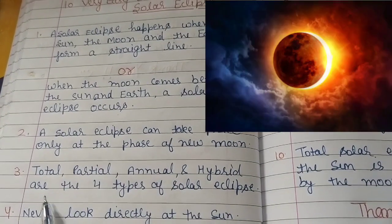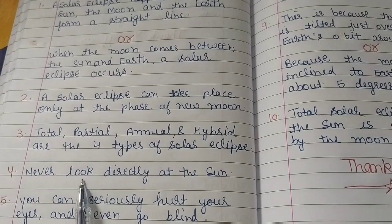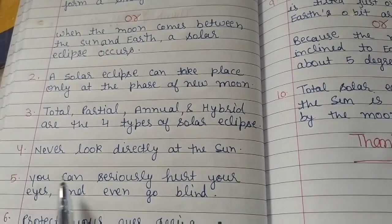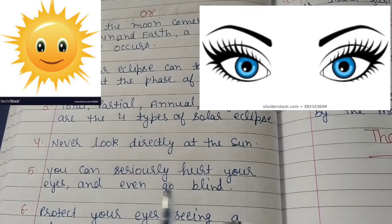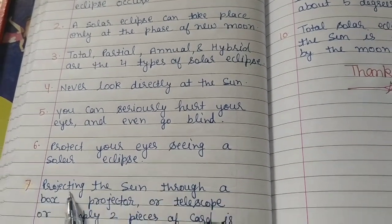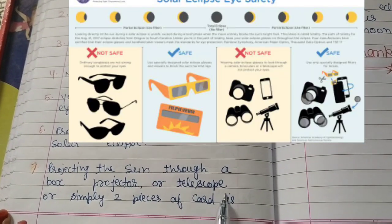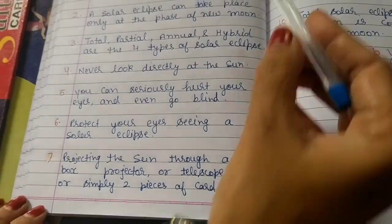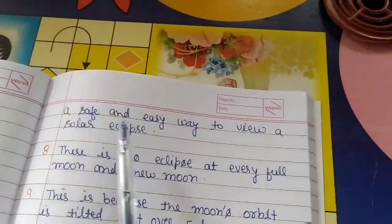Total, partial, annular, and hybrid are the four types of solar eclipse. Never look directly at the sun — you can seriously hurt your eyes and even go blind. Projecting the sun through a box projector, telescope, or simply two pieces of card is a safe and easy way to view a solar eclipse.